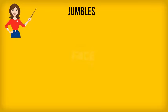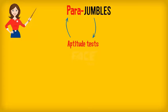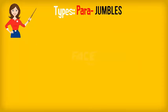In verbal aptitude tests, jumbles appear in the form of para-jumbles. Solving para-jumbles is like cracking codes. Just like how every code has a cipher which can be used to crack it, every para-jumble has a strategy which can be used to solve it. First of all, let us look at the types of para-jumbles.